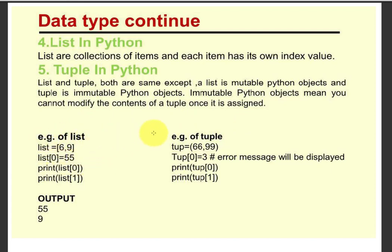Let's see the example of lists and tuples. There I am creating a list value — the list object has the values 6 and 9. list[0] means index 0 is 6 and index 1 is 9. I am changing the value at index 0 to 55. When I execute print list[0], that will execute 55. And if I execute list[1], that will execute 9. Such type of operations we can perform with a list.